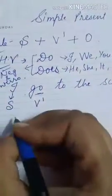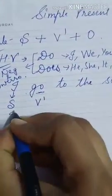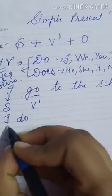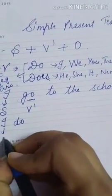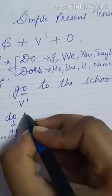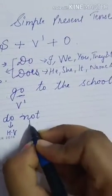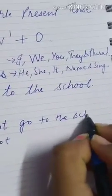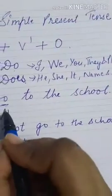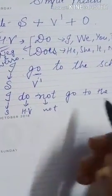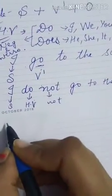This is a simple sentence. Now if I have to make it negative — with 'I' we use 'do' — so the structure is: subject + helping verb + not. For example: 'I do not go to the school.' That means 'main school nahi jati' — I do not go. Whereas 'I go' means 'main jati hun'.